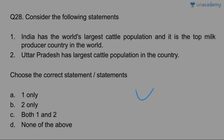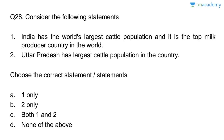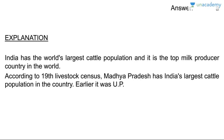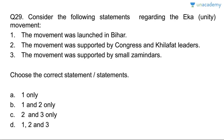India has the world's largest cattle population and is the top milk producer in the world — correct. UP has the largest cattle population in the country — no, MP has the largest now; earlier it was UP. Answer is A, one only.